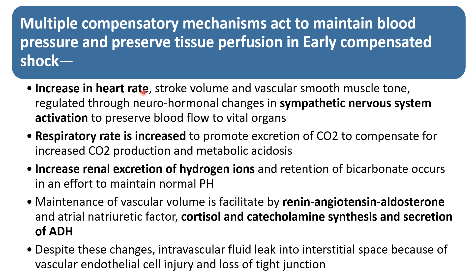Heart rate will be increased, stroke volume will be increased, and vascular smooth muscle tone will be increased. This is regulated through neurohormonal changes — sympathetic nervous system activation — to preserve blood flow to the vital organs such as the heart and brain. Respiratory rate is increased to promote excretion of CO2, to compensate for increased CO2 production and metabolic acidosis. Increased renal excretion of hydrogen ions occurs, and retention of bicarbonate in an effort to maintain normal pH.